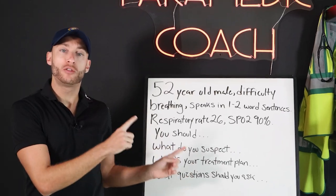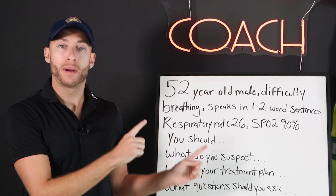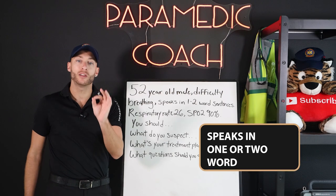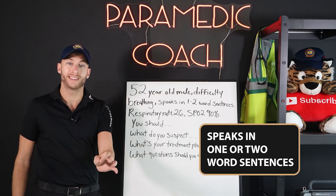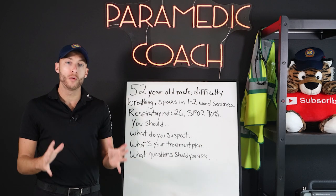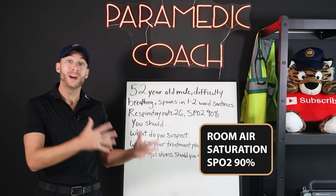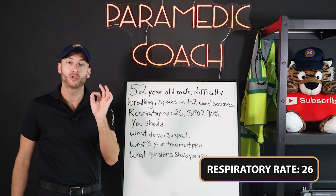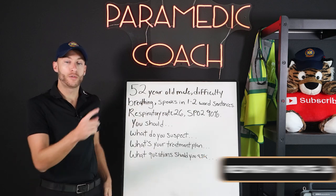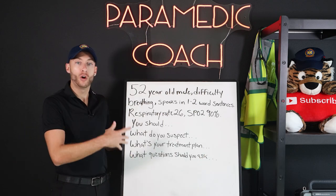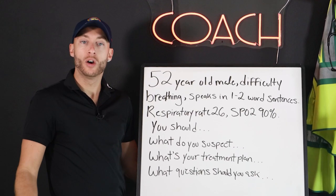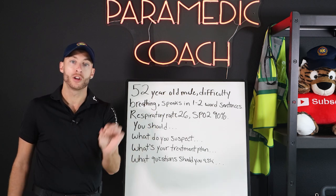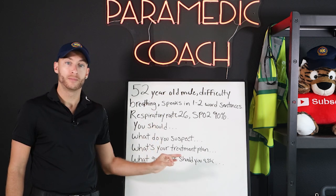Remember this 52-year-old male patient with difficulty breathing. He speaks in one to two word sentences. Room air saturation, SpO2, is 90%. Respiratory rate of 26. You find this patient — what should you do next? By the end of this video, you're going to know exactly what to do.